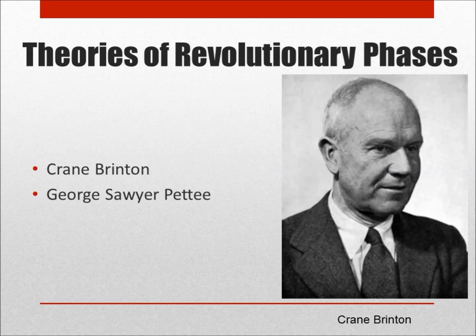The revolutionary coalition next begins to fall apart due to internal divisions. The next phase is the emergence of a relatively moderate post-revolutionary government. Next, the failure of the moderates to satisfy popular expectations leads to the emergence of a more radical group of revolutionaries taking power. These new radical revolutionaries then employ extreme measures to continue the revolution, alienating much of the population. And in the final phase, pragmatic moderates replace the radicals and turn back some of the excesses of the radical phase.